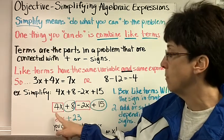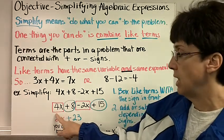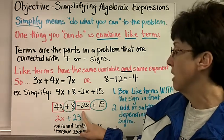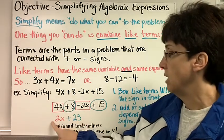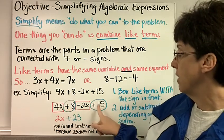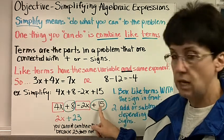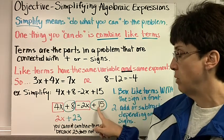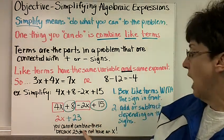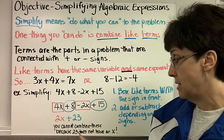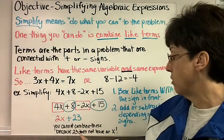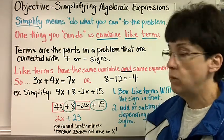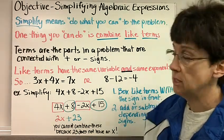If it's negative, it'll have a sign too. Now I just combine the ones I can. It's 4x minus 2x, I'm going to subtract. So that's a little problem I can do in my head and get 2x. Positive 8 and positive 15, I can add those together and get 23. So when I simplify this expression, I get 2x plus 23. And I cannot combine these because the 23 does not have an x. So 2x and 23 are not like terms because one has an x and one doesn't.